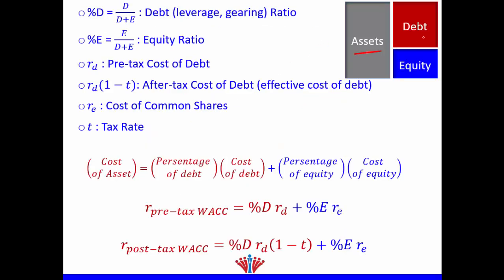We know that our assets are composed of debt and equity. Therefore, if I would like to calculate the cost of assets — which includes both debt and equity — we call it cost of capital. Since debt and equity are not equal, meaning they don't have the same percentage, we cannot use a simple average. We need the weighted average. Therefore, the cost of capital equals the percentage of debt times cost of debt, plus the percentage of equity times cost of equity.